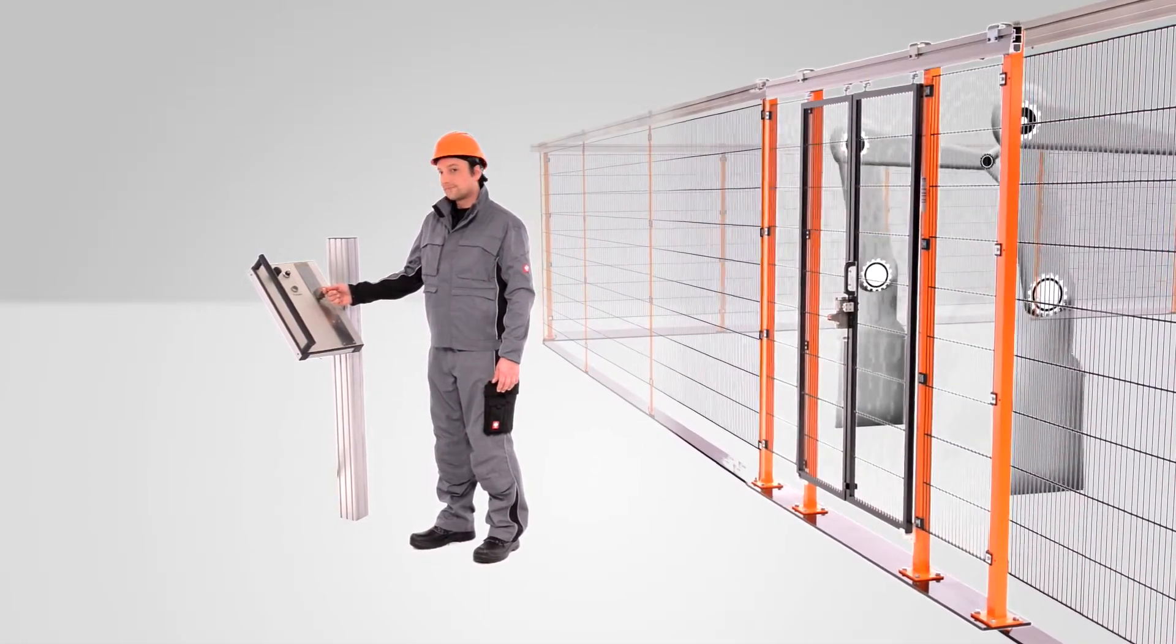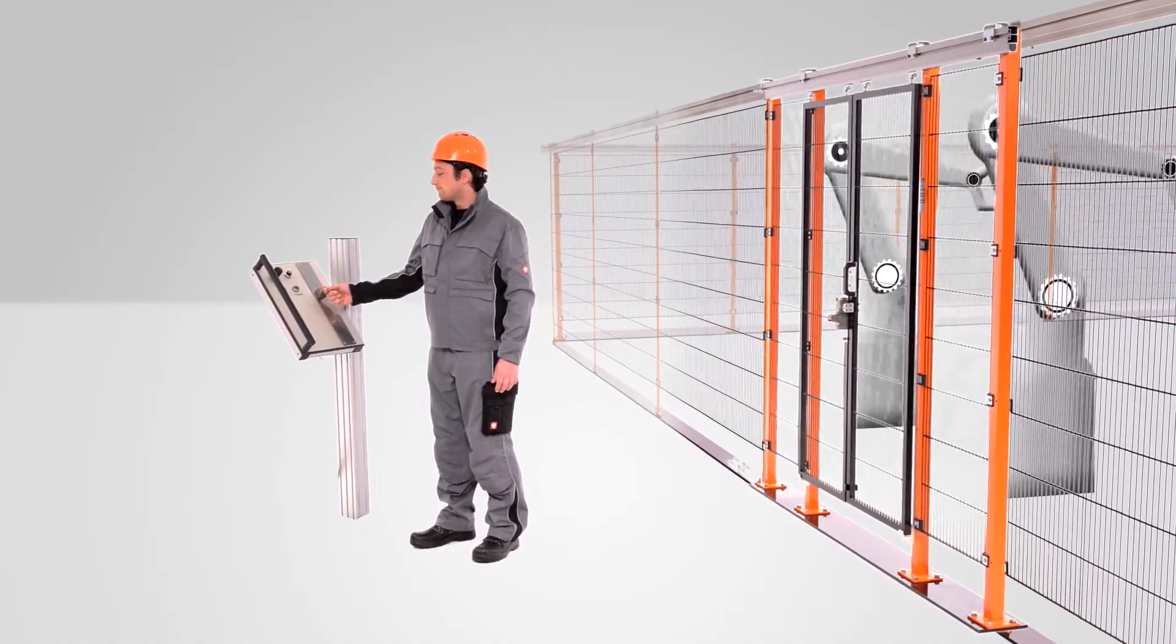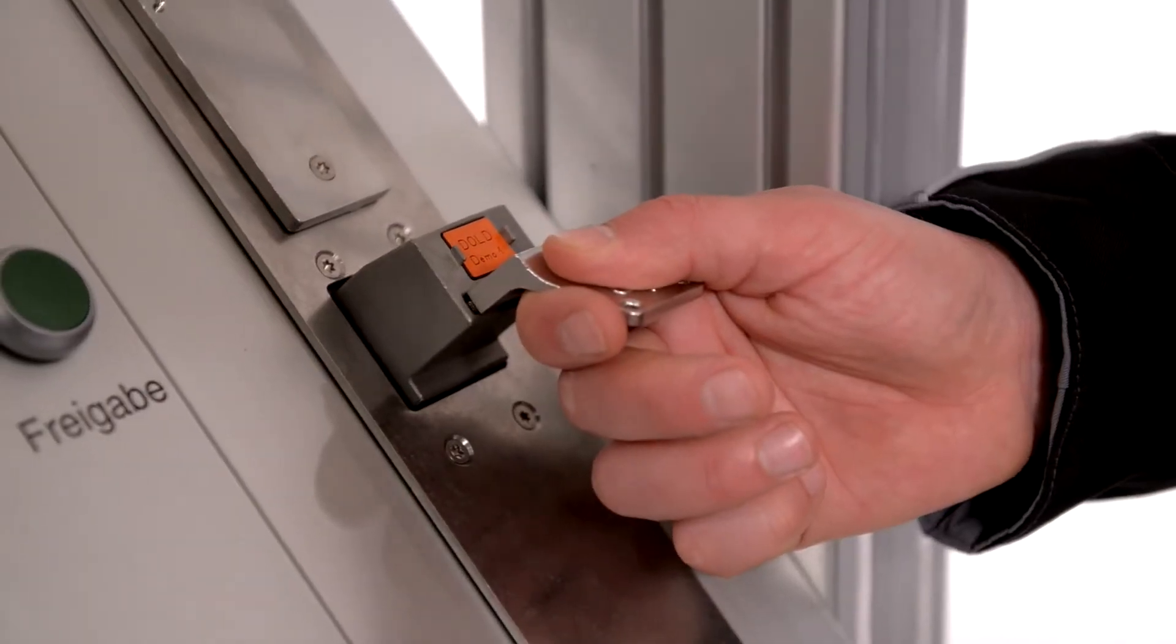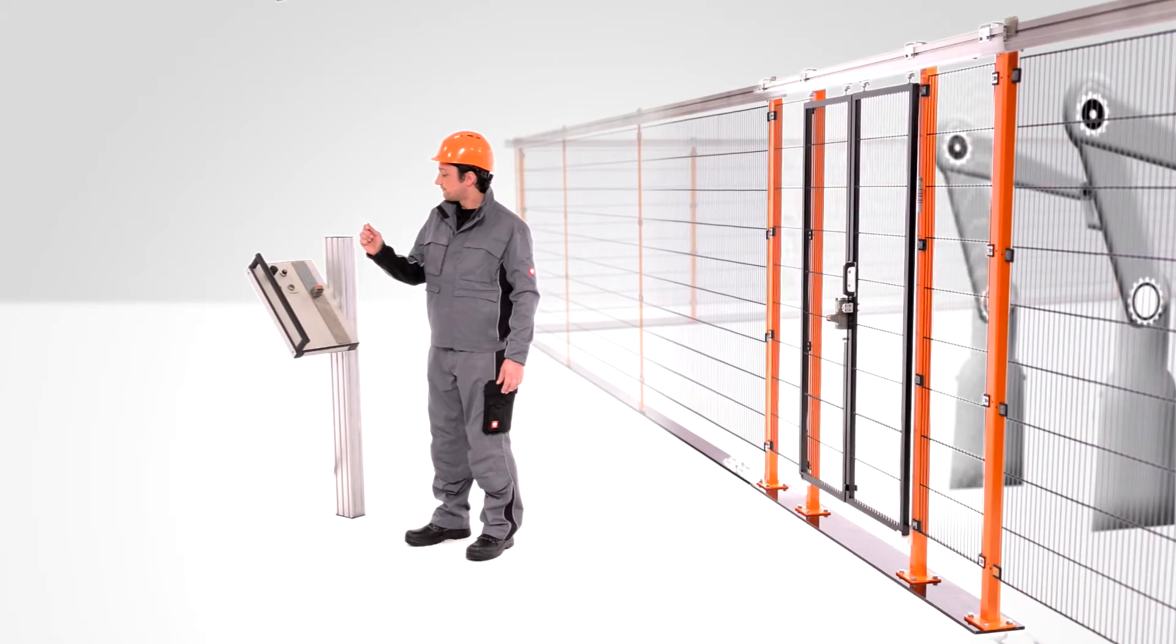For example, if Sam needs to carry out maintenance, a personal key must be removed from the control panel in order to open the safety gate.